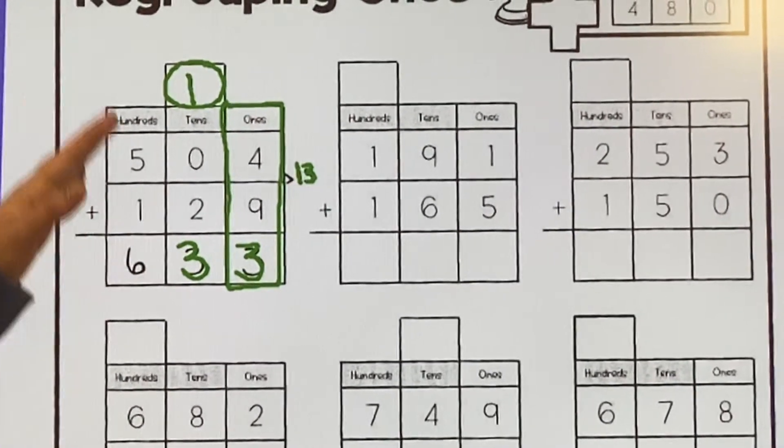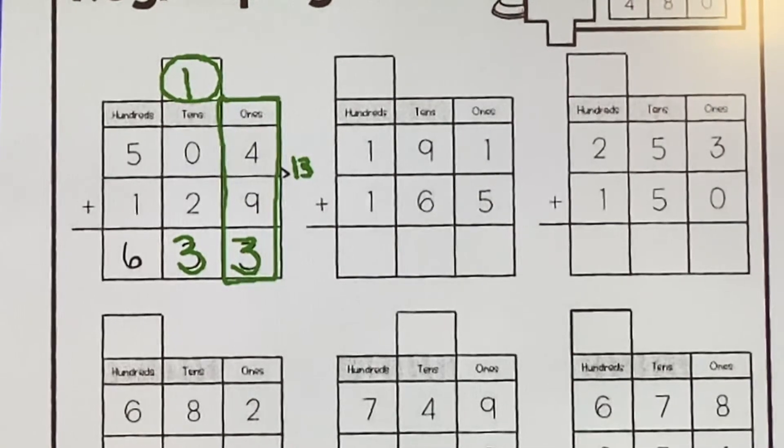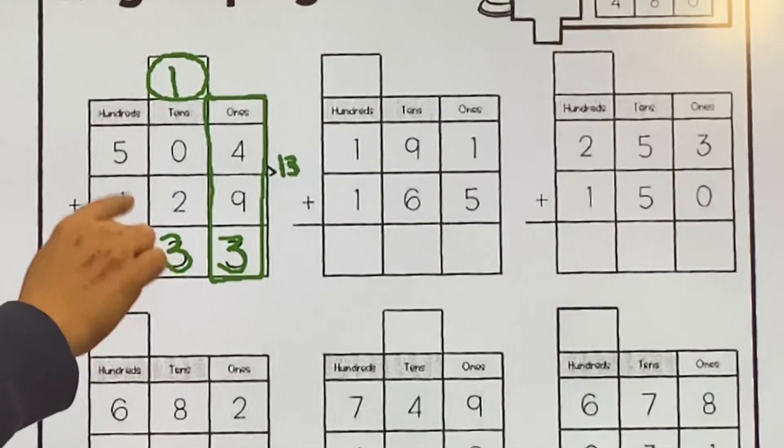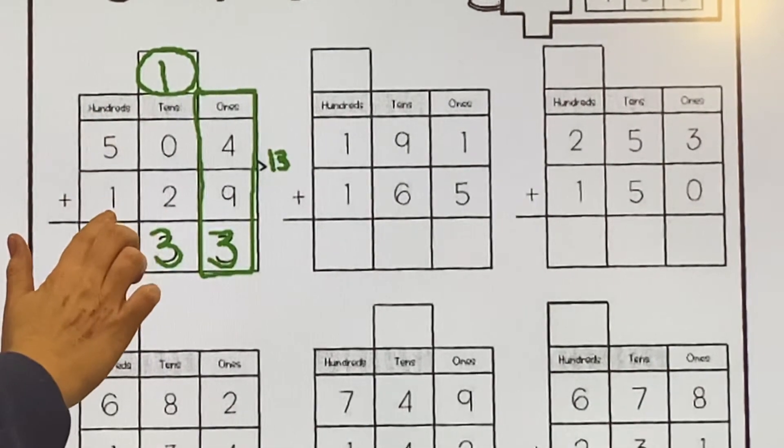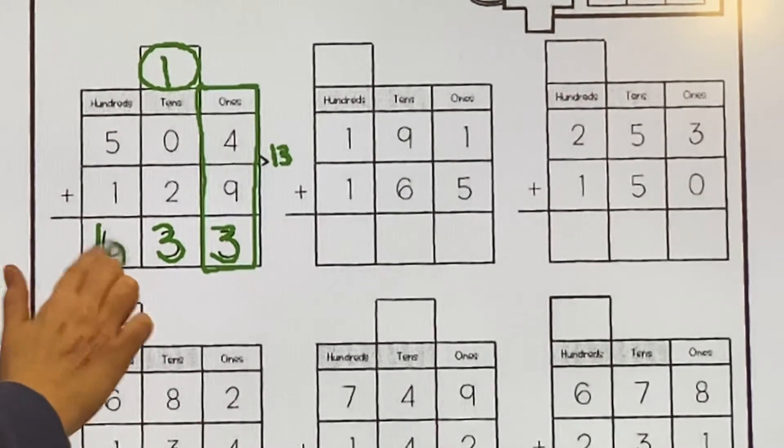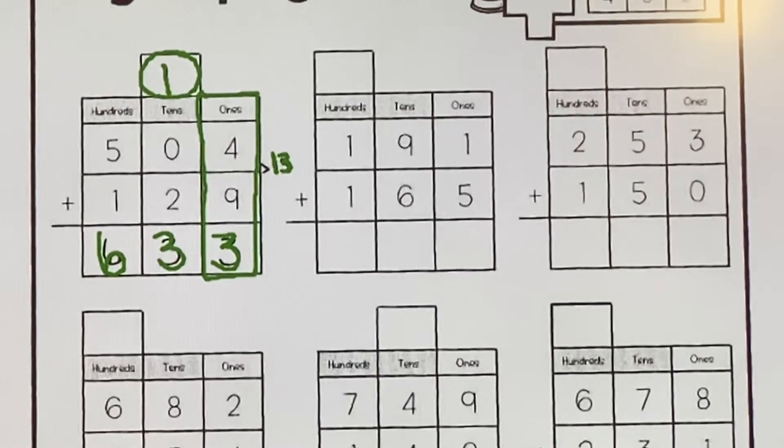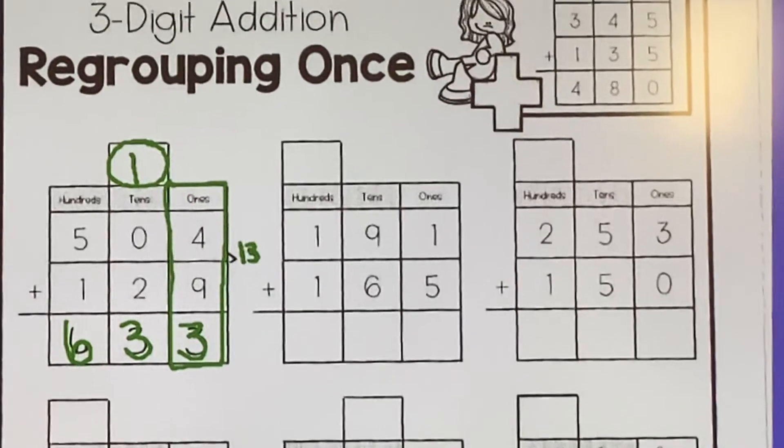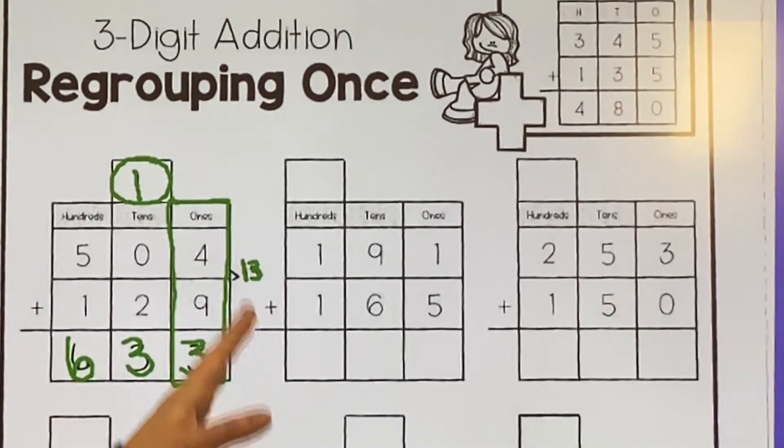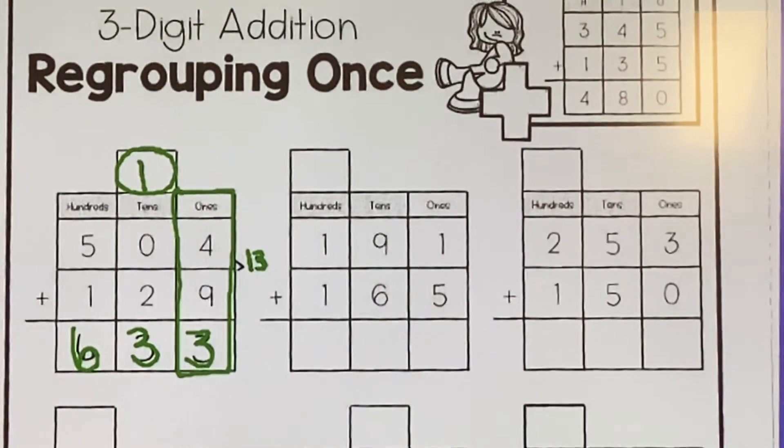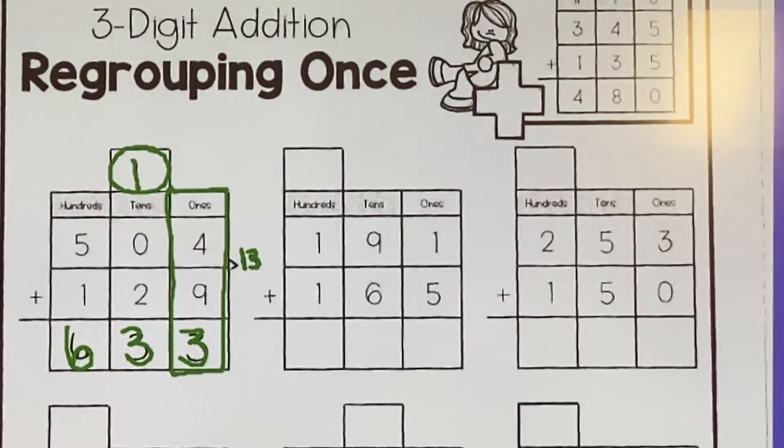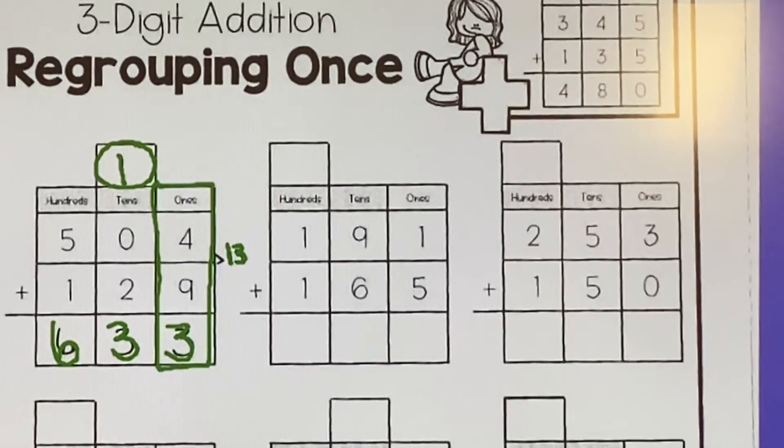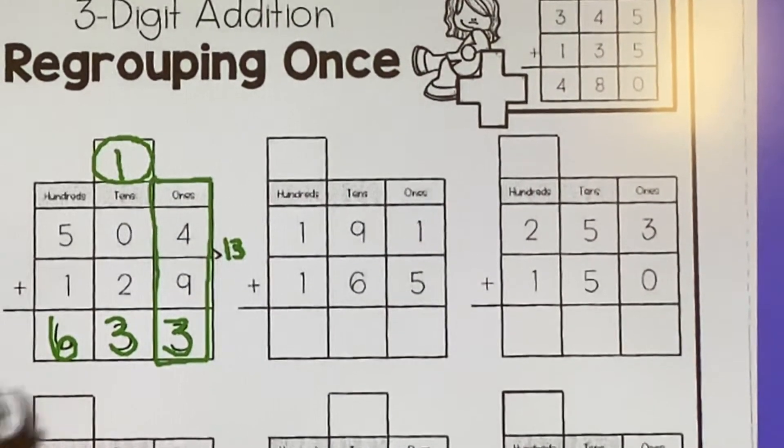Then there's nothing to carry up here into the hundreds place. So we're not regrouping at all here because there are no hundreds in this number. So we just do five plus one equals six, and we get the answer 633. Make sure that you go through, check if you need to regroup. It even gives you these nice little boxes to kind of give you guidance for which place value you need to regroup in. If you have any questions about that, you can always message your teacher or come to your Zooms.